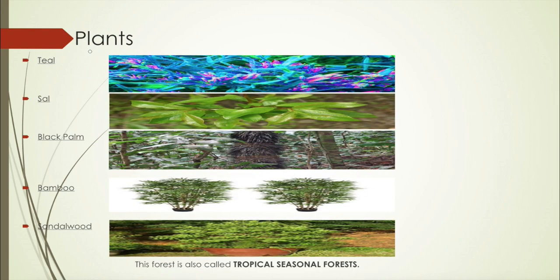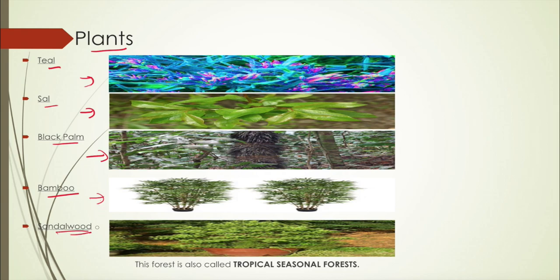The plants found in this region include teak and sal, both very common in India. Black palms are also one of the main plant types found here. Bamboo trees are abundant — they grow very tall, and many people also keep bamboos as a lucky charm at home. Sandalwood is also found here — the famous Sundarbans in India is a well-known sandalwood forest.